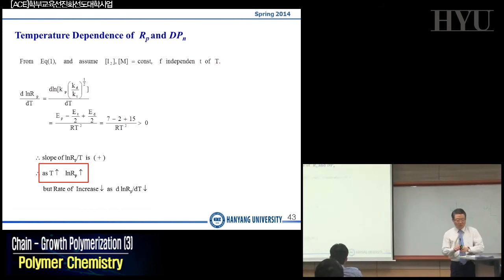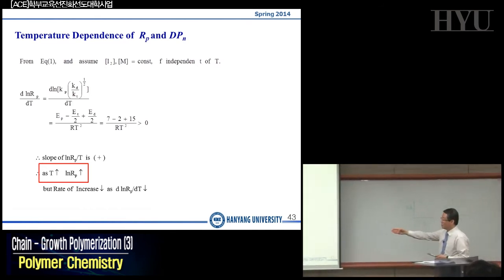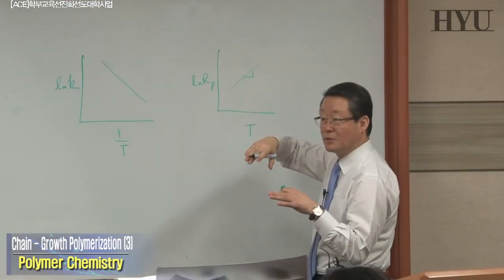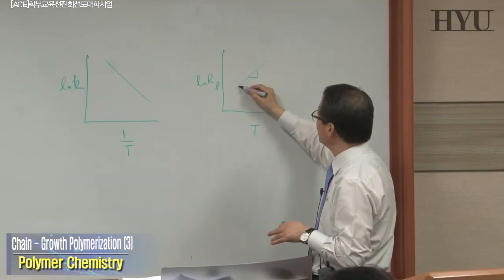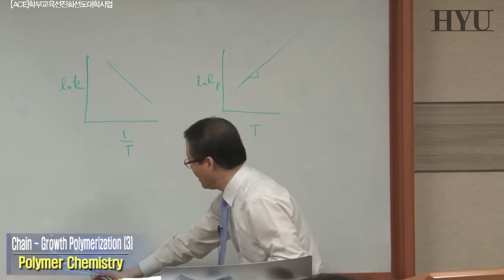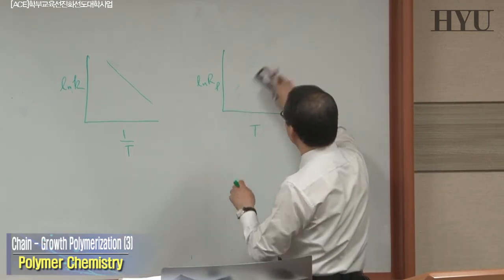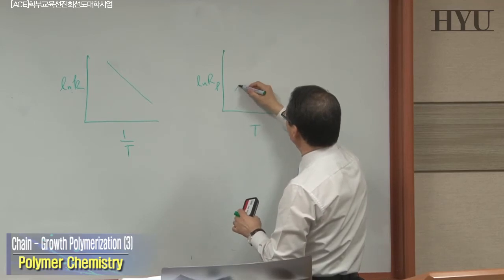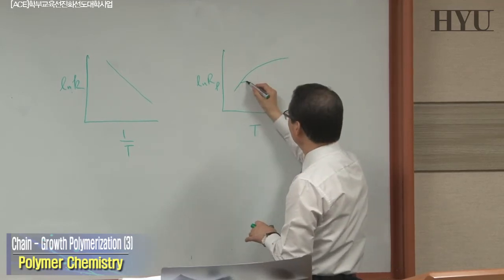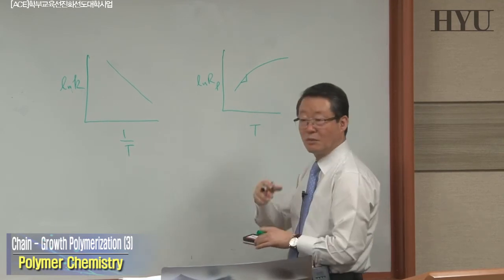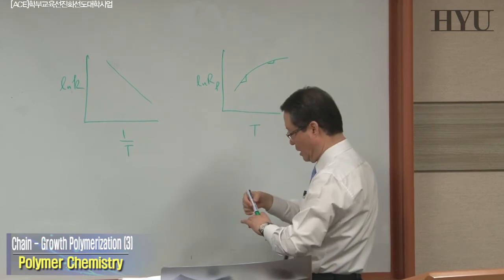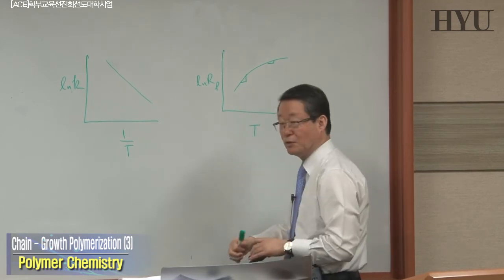The rate of increase with temperature will slow down, meaning RP is not increasing linearly but perhaps asymptotically. The slope will be quite high at the beginning but may not be the same at high temperature as at low temperature.